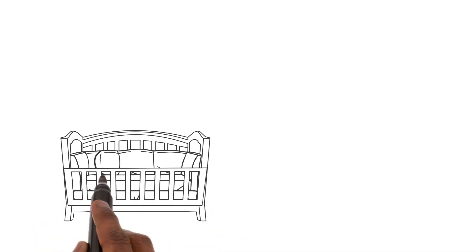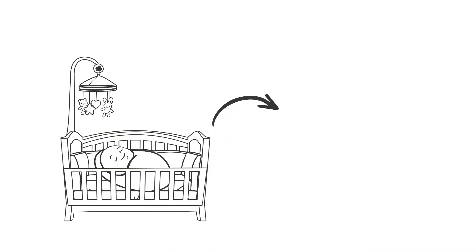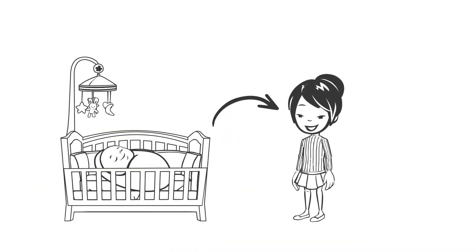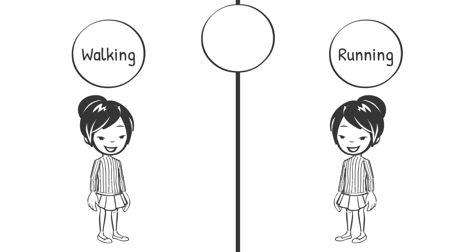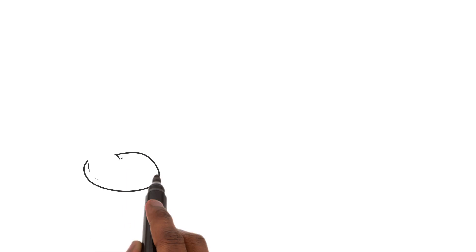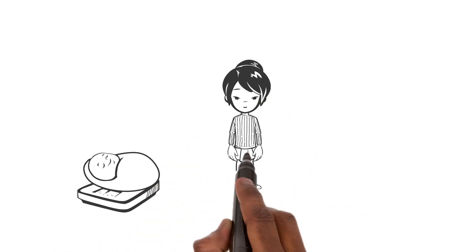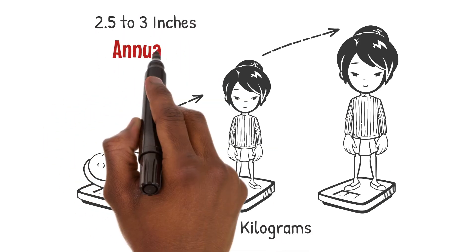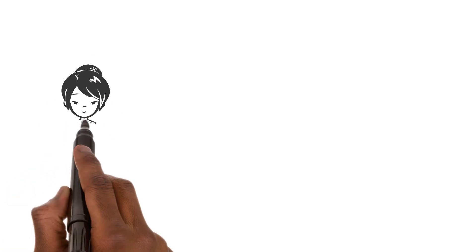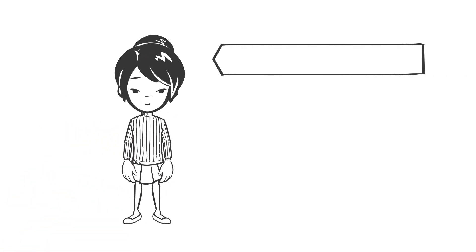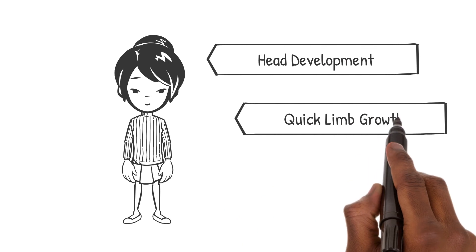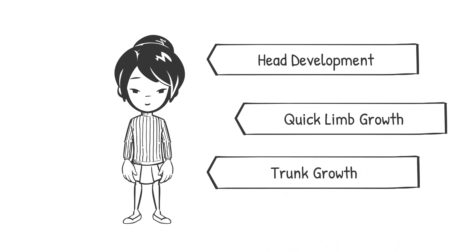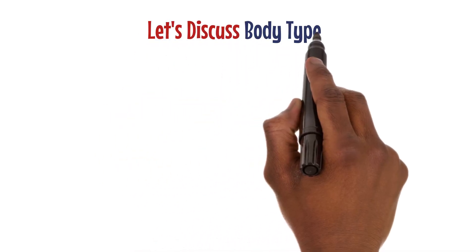Moving on to early childhood — from ages two to six — growth slows down compared to infancy. It's during this time that children learn essential skills like walking, running, and dressing themselves. Children in this age group typically gain around 2.5 kilograms and grow 0.5 to 3 inches annually. Their body proportions start to resemble that of a child, with slower head development, quick limb growth, and medium trunk growth.